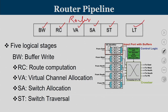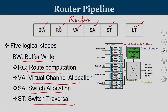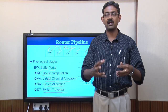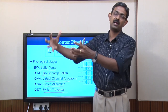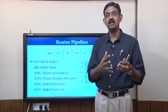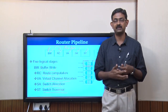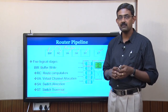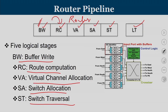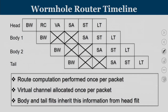This is the traditional router pipeline with five logical stages: buffer writing, route computation, virtual channel allocation, switch allocation, and switch traversal, followed by link traversal. In a pipelined manner, while performing route computation for one flit, buffer writing can happen for another — similar to instruction pipelining. A router may have multiple stages operating in parallel. This shows that it requires close to five cycles to complete operations for a packet inside a router. Five cycles is on the higher side — can we optimize it? Some of these units can be merged together.